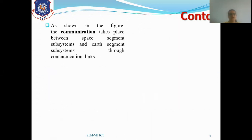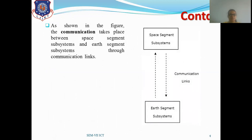As shown in the figure, communication takes place between the space segment subsystems and earth segment subsystems through a communication link. The space segment subsystem contains the satellite and its various components, while the earth segment includes earth station antennas connected with various blocks.